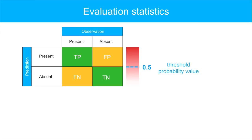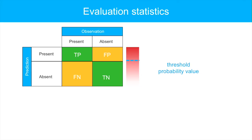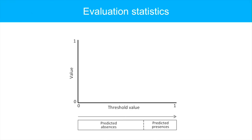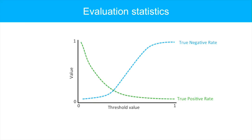Because the elements of the contingency table are dependent on the value of the probability threshold, the threshold value regulates the outcomes of the evaluation statistics. With an increasing threshold value, the number of predicted presences will decrease, and thus the proportion of presences correctly predicted will decrease. Looking at a graph with threshold value on the x-axis and the true positive and true negative rates on the y-axis, the true positive rate decreases with an increasing threshold value while the true negative rate increases. There are a number of different methods to select the threshold value, which I will highlight.